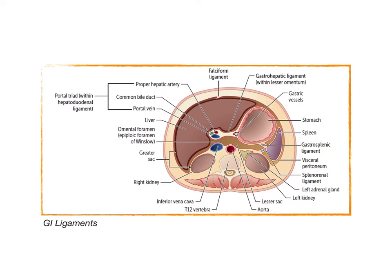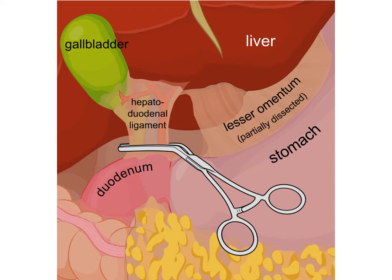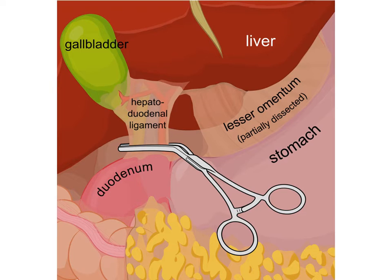This is an example of the hepatoduodenal ligament. In each of those different ligaments there are very vital structures contained in them. On USMLE Step 1, Comlex Level 1, Level 2, Level 3, Step 2, Step 3, and beyond, the test writers love asking you what structures are in all of these different ligaments.